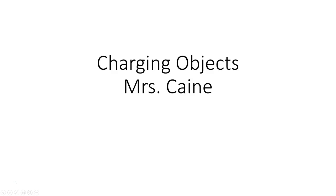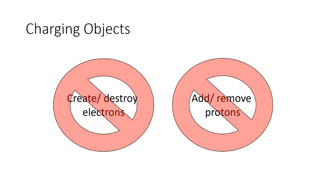Charging objects. Charging an object does not mean creating new charges. Charging means adding electrons, moving electrons, or temporarily separating the electrons from the protons. We're never going to create new electrons or change the number of protons.